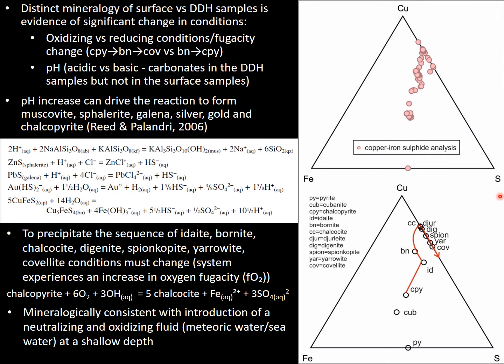Distinct mineralogy of surface versus diamond drill hole samples is evidence of a significant change in conditions: oxidizing versus reducing conditions, oxygen fugacity change, and pH change — acidic versus basic — since we do have carbonates in the diamond drill hole samples but not in the surface samples. A pH increase could drive the reaction to form base and precious metals in muscovite, as you can see in the equations presented. To precipitate the sequence of the major surface sulfides, the sequence of which you can trace on the ternary diagram, the system must experience an increase in oxygen fugacity. This is consistent with the introduction of a neutralizing and oxidizing fluid, potentially meteoric water or seawater at shallow depths.